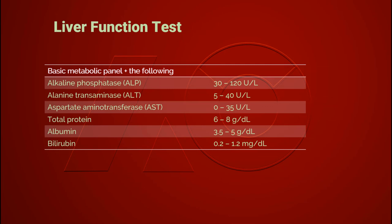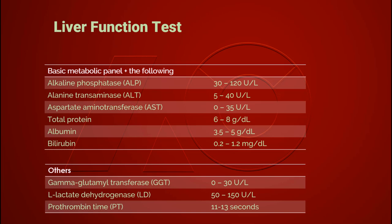Liver function can be tested via comprehensive metabolic panel or via individual liver enzymes. Listed here are the normal ranges for liver enzymes, protein, albumin, and bilirubin. When the liver is intact and healthy, these test results should be within normal range. If the levels of liver enzymes increase, the liver cells must be damaged. Bilirubin level is correlated to the symptom of jaundice. Some other test items may signify the status of the liver but may not be routinely ordered for hepatitis B patients.